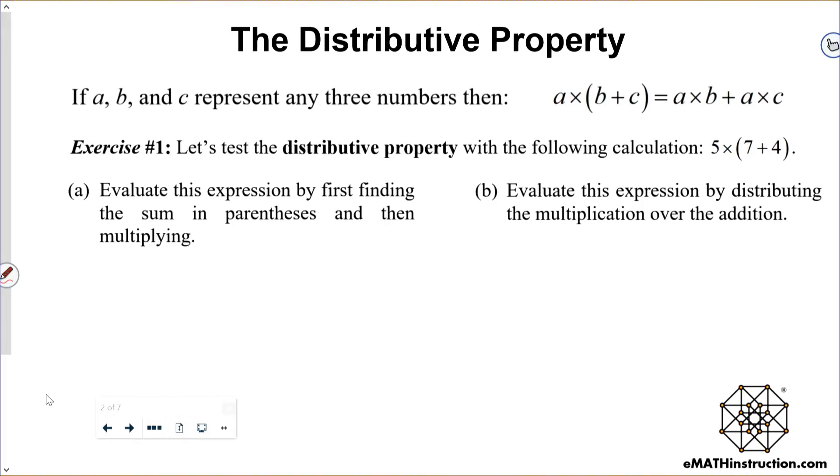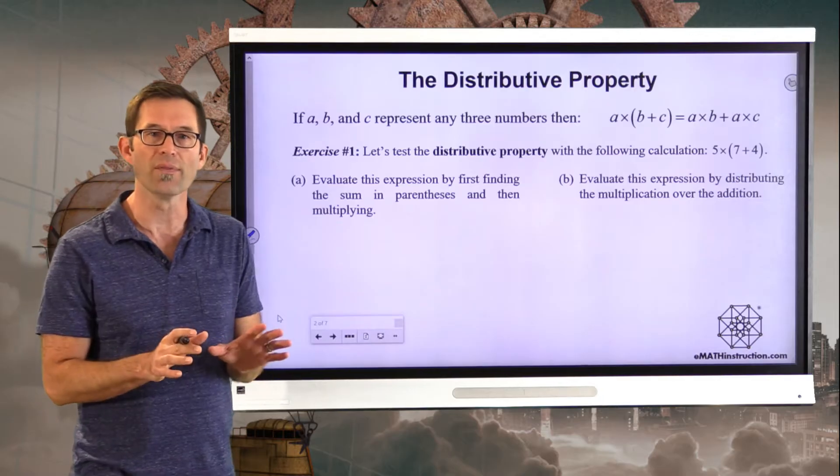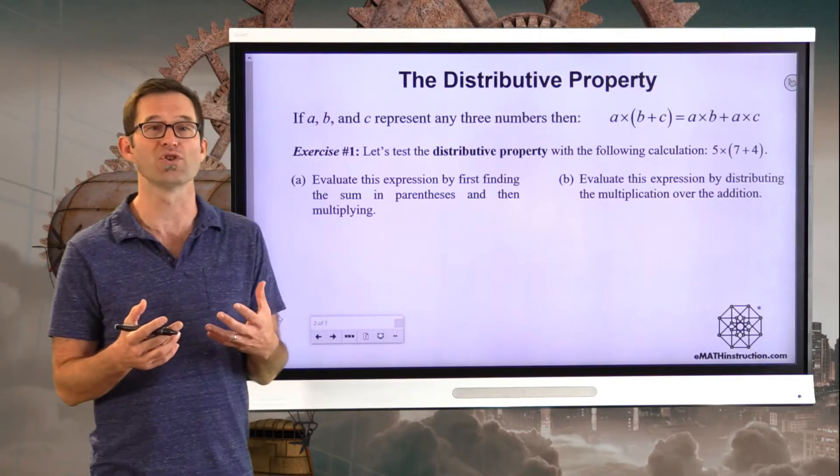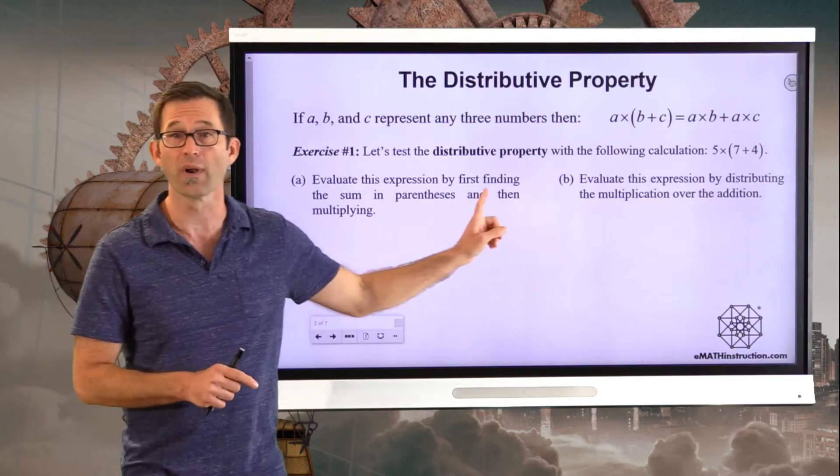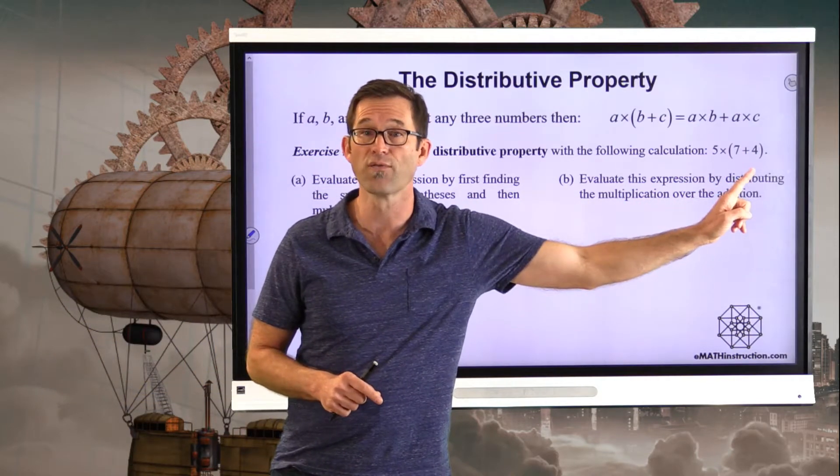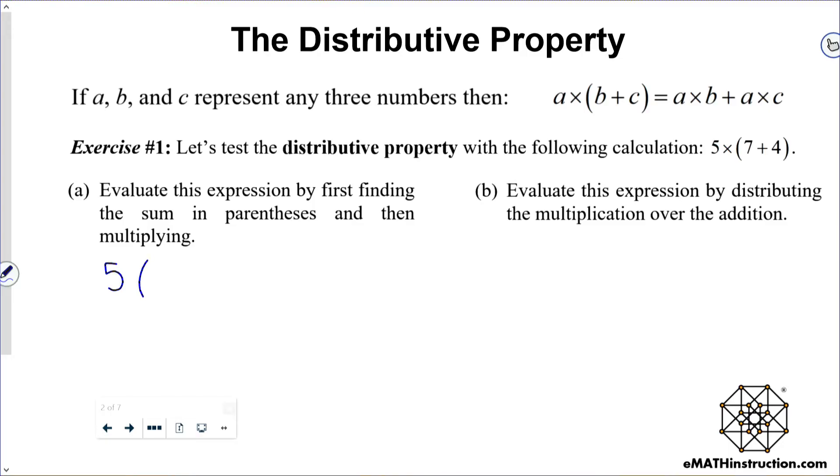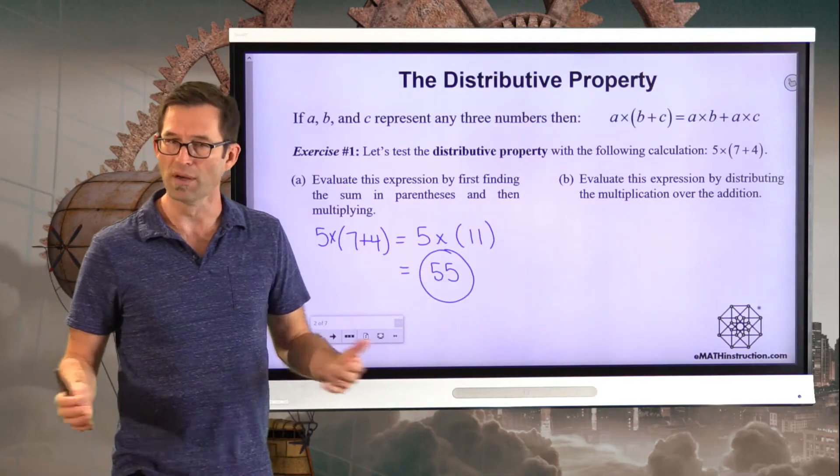Let's test the distributive property with the following calculation: 5 times the sum of 7 plus 4. In letter A, it says evaluate this expression by first finding the sum in parentheses and then multiplying. The order of operations would actually insist that we do 7 plus 4 first and then multiply by 5. So let's go ahead and do that. 5 times 7 plus 4 must be equal to 5 times 11, and that is obviously equal to 55. So that's simple enough. Obviously, 5 times 7 plus 4 must be equal to 55.